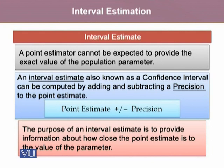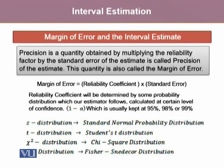The purpose of an interval estimate is to provide information about how close the point estimate is to the value of the parameter. Whereas the precision is a quantity obtained by multiplying the reliability factor by the standard error of the estimate. This quantity is also called the margin of error. So the precision equals the margin of error equals the reliability coefficient multiplied by the standard error.